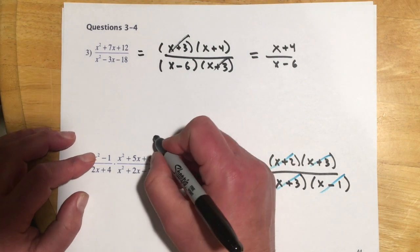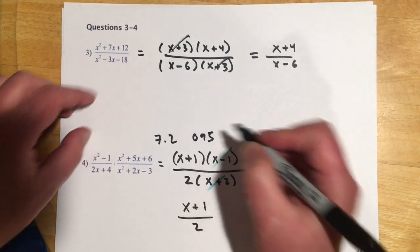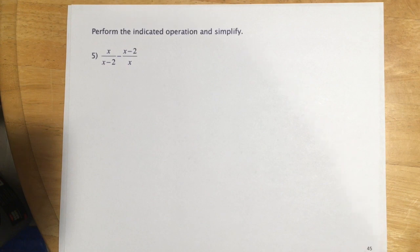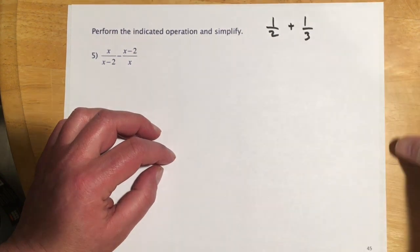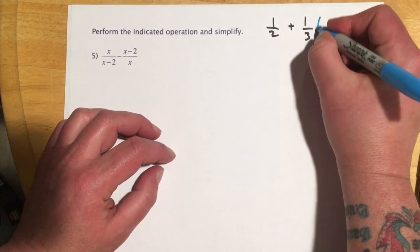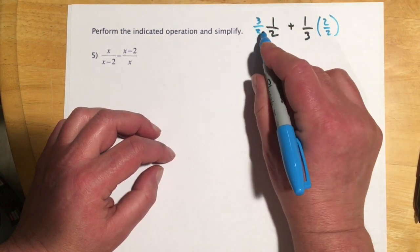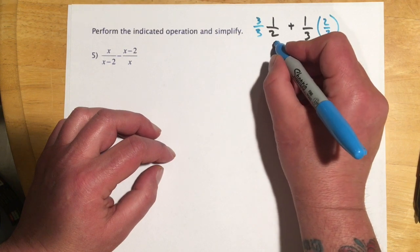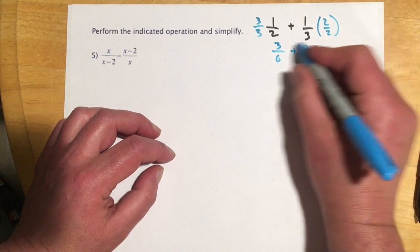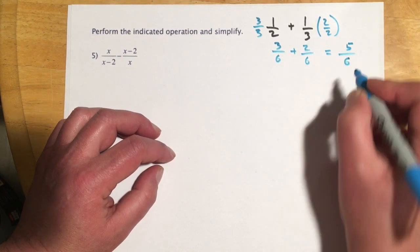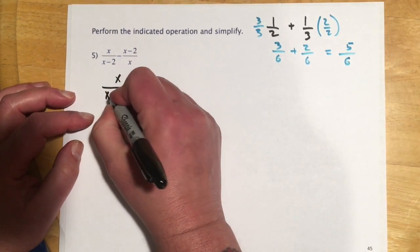That last example was section 7.2 in Math 095, and the one before was 7.1. Now we move to adding and subtracting fractions. Remember, with regular fractions we need a common denominator — for example, one-half plus one-third: we multiply to get sixths, giving 3/6 plus 2/6, and once they share a denominator we add numerators to get 5/6. We'll do the same thing with algebra, and this is section 7.3 from Math 095.